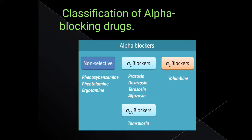Then the classification of alpha-blocking drugs — i.e., non-selective alpha, alpha-1, alpha-2, and alpha-1a subtypes. From a test point of view, you should also learn the specific drugs within each classification.